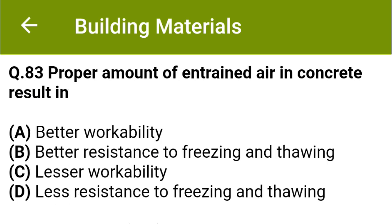Proper amount of air entrainment included in concrete results in: option A, better workability; option B, better resistance to freezing and thawing; option C, lesser workability; option D, less resistance to freezing and thawing. The correct answer is option A and B, better workability and better resistance to freezing and thawing.